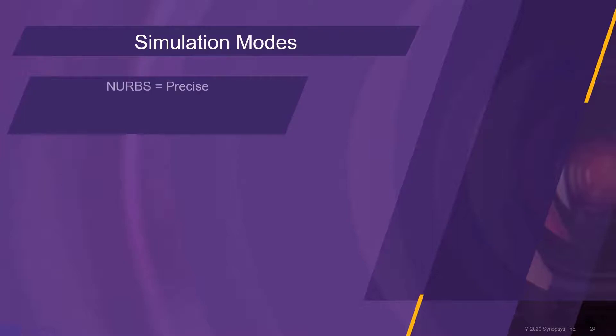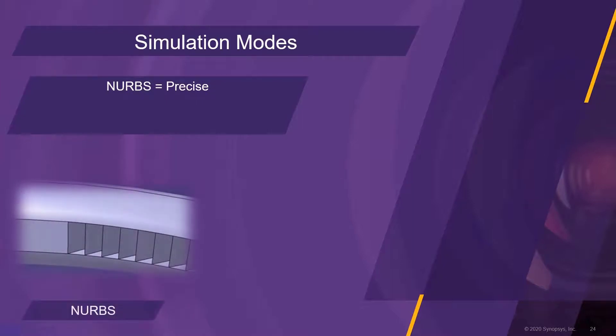The NURBS mode directly uses the NURBS surfaces for simulation, and therefore is the most precise simulation method. The mesh mode uses a triangle grid to approximate the surfaces. During simulation, triangles can be evaluated faster, increasing the speed of the simulation. However, this mode introduces an error by the approximation of curved surfaces.